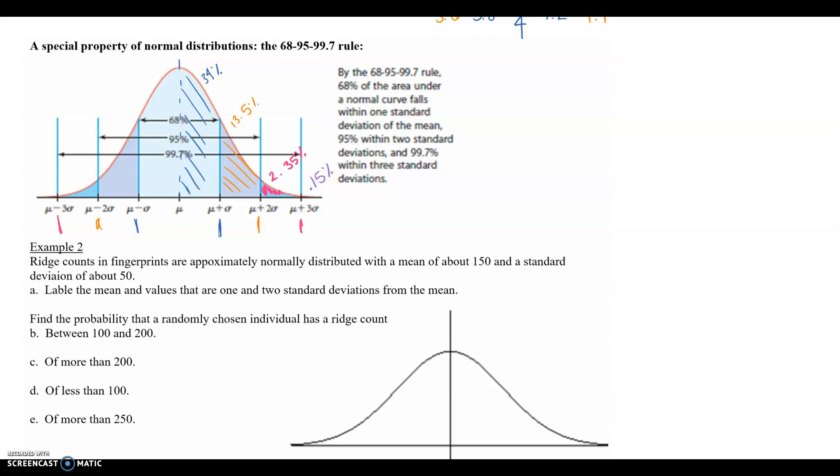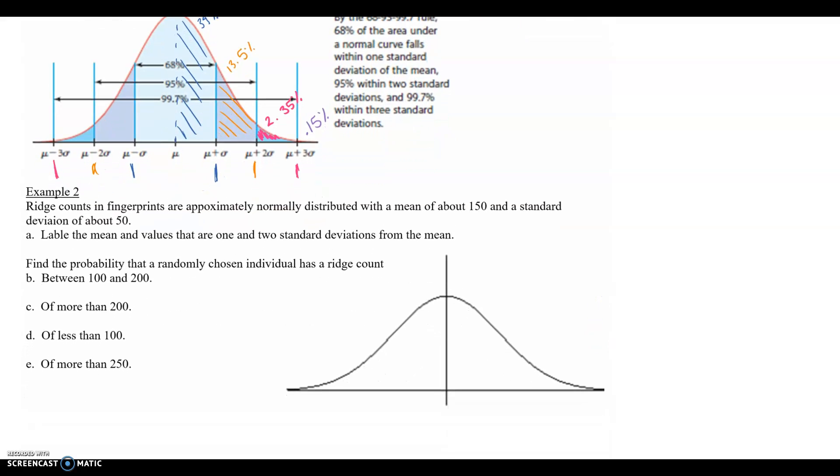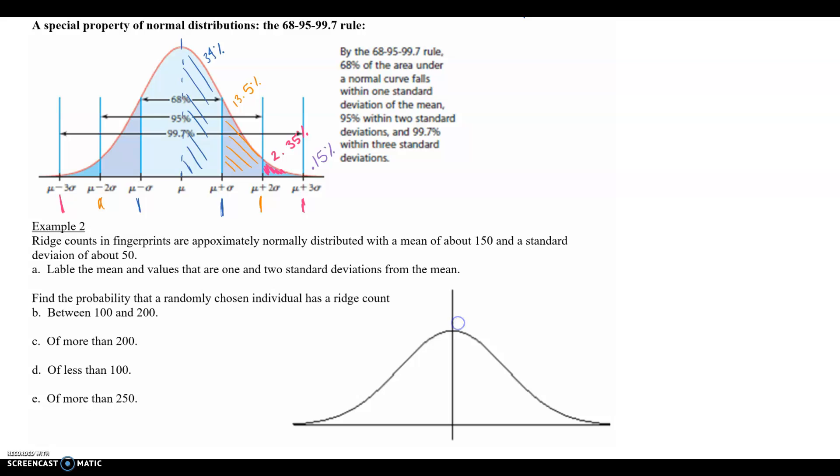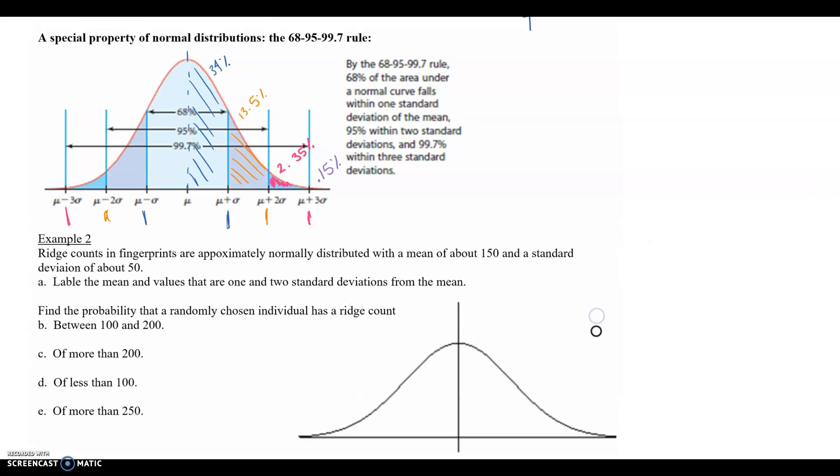All right, so example two. Ridge counts in fingerprints are approximately normally distributed with a mean of about 150 and a standard deviation of about 50. Label the mean and values that are one and two standard deviations from the mean, and then find all of these probabilities. So what I'm going to suggest is, I think you guys know enough at this point, you should pause the video and then work amongst yourselves to figure out a through e, and then hit play to check your answers.